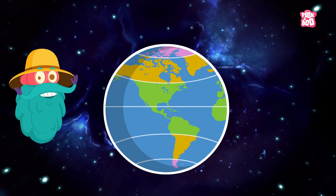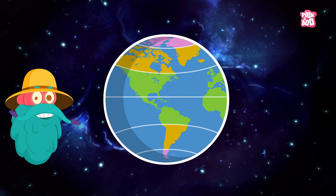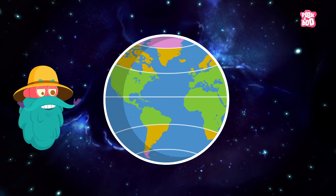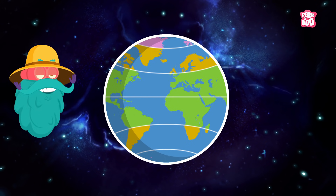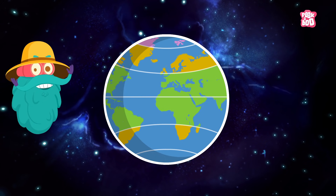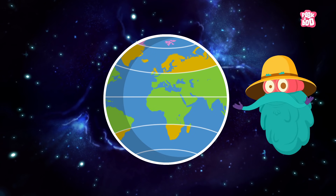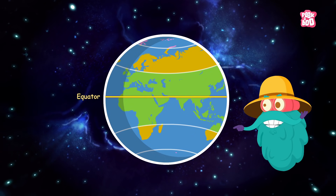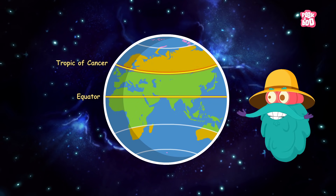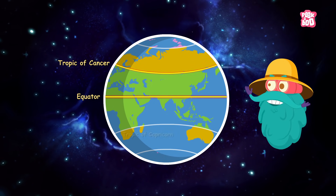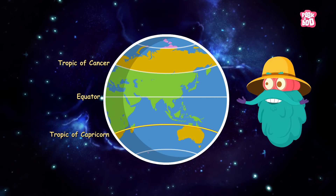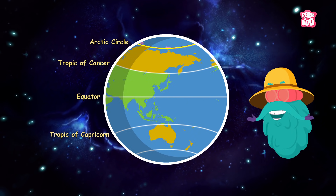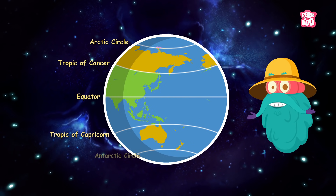The climate zones of earth are distinguished by the latitudes that run across the earth's surface. The most important ones are the equator, Tropic of Cancer, Tropic of Capricorn, the Arctic Circle and the Antarctic Circle.